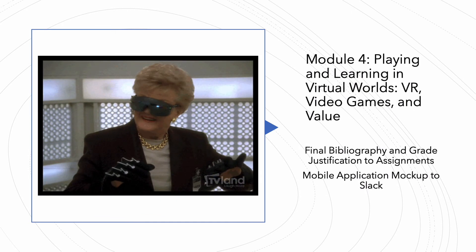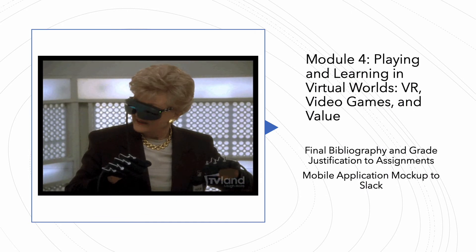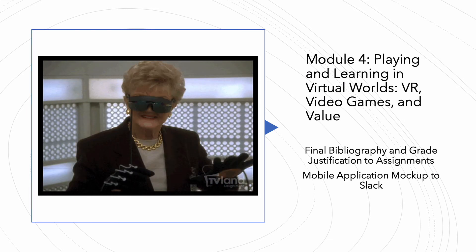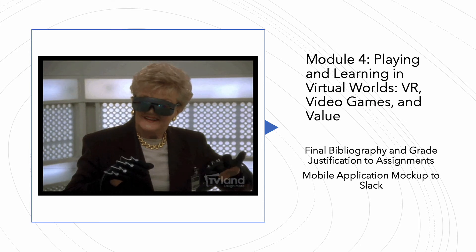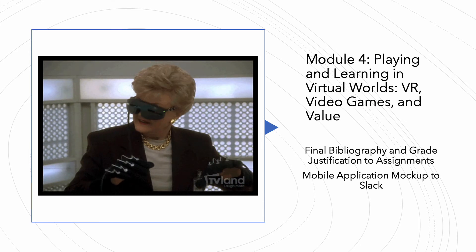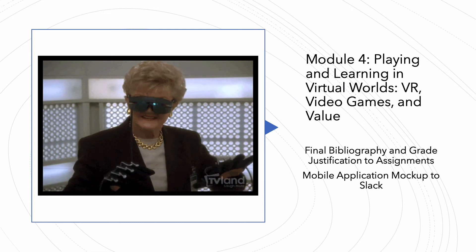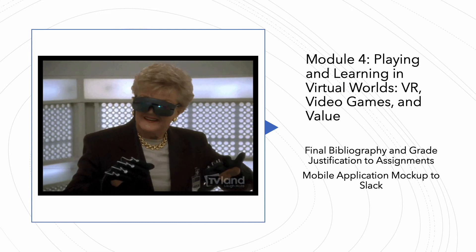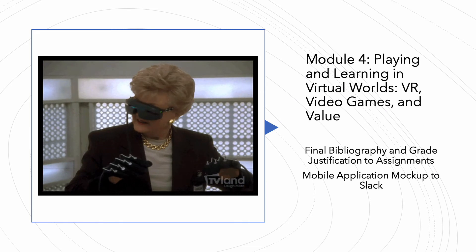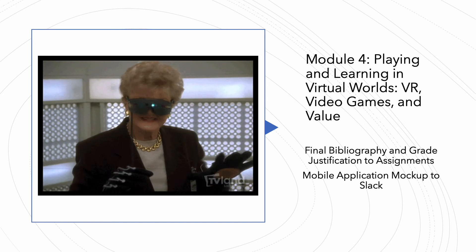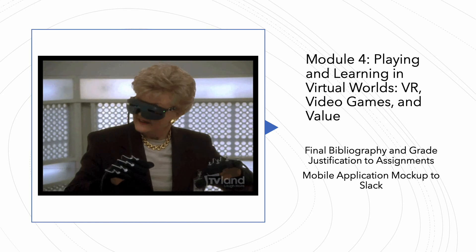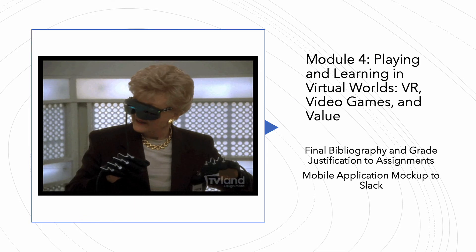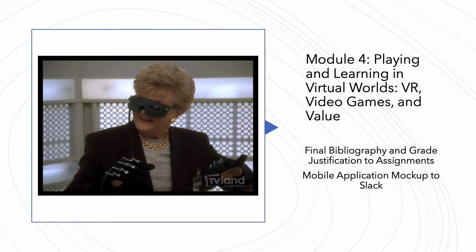In module four, we'll look at playing in virtual worlds — the idea of virtual reality, video games, and their value. You'll submit your final bibliography and a grade justification, where you take a look at the rubric and tell me why you think you should get a good grade. You'll also do a mobile application mock-up and post that to Slack. This mock-up can be using any media — it can be on paper, it could be a PowerPoint. If it's on paper, you'll need to take pictures of it to post to Slack, but you can use whatever medium you want.